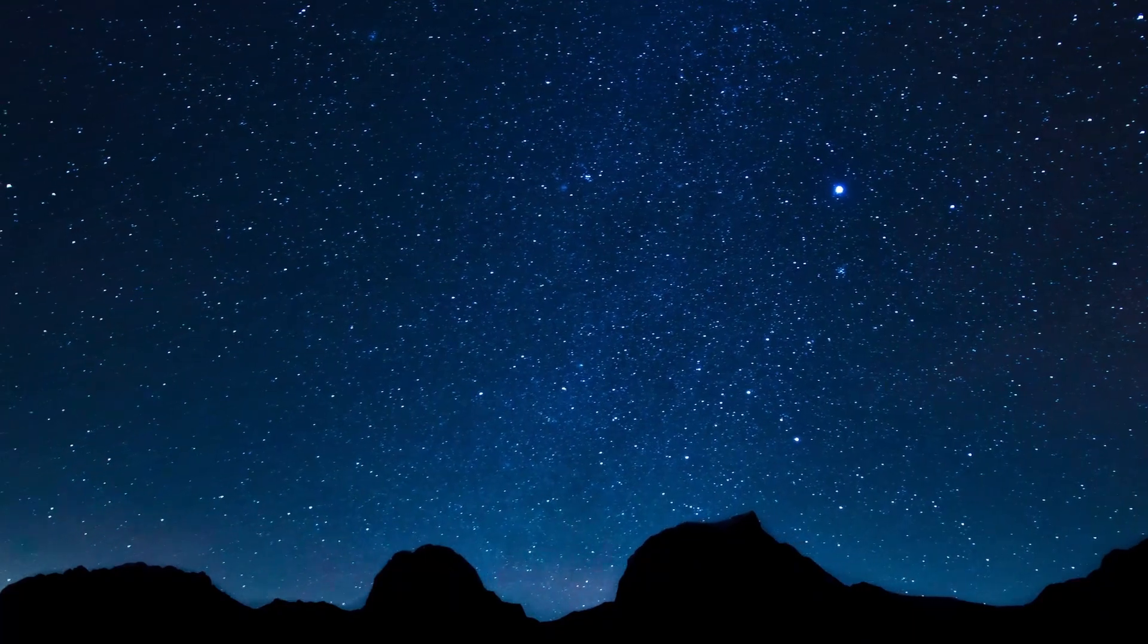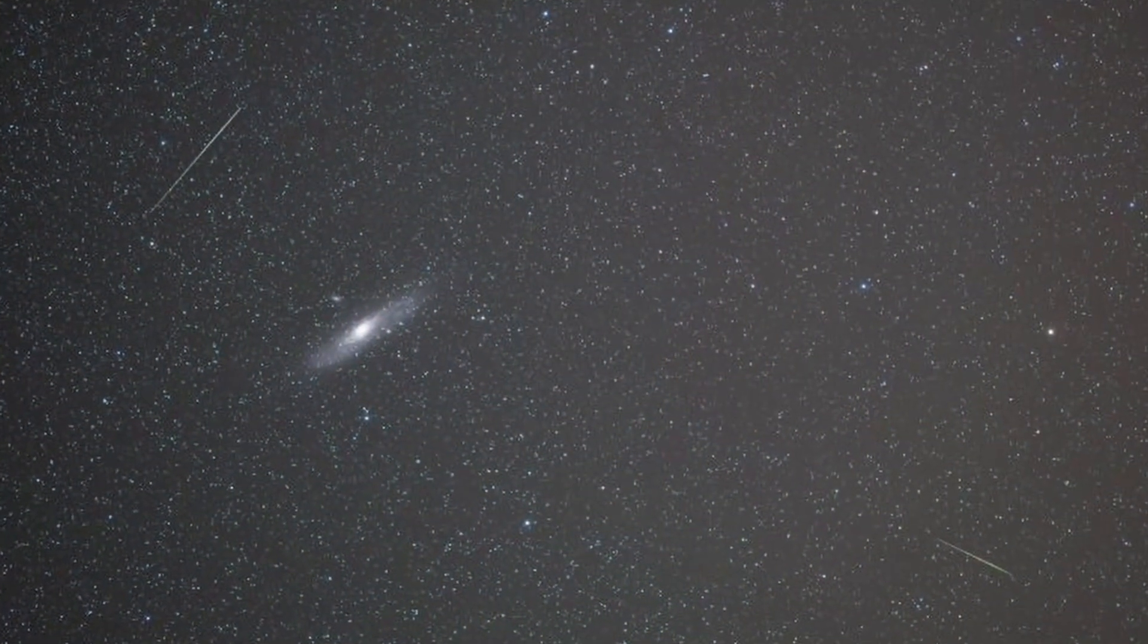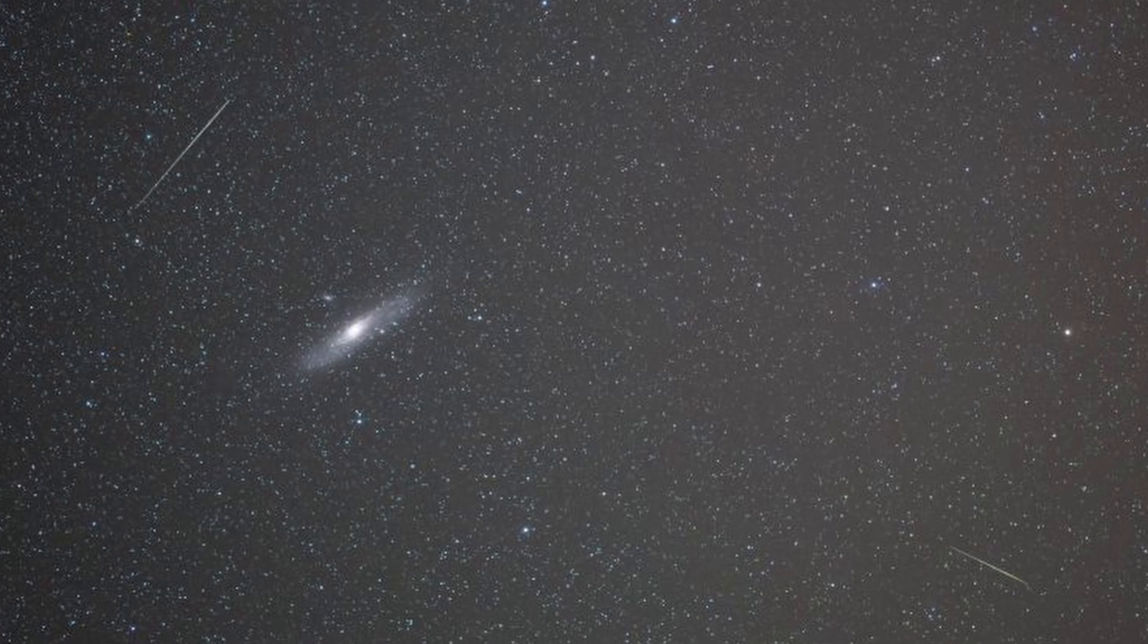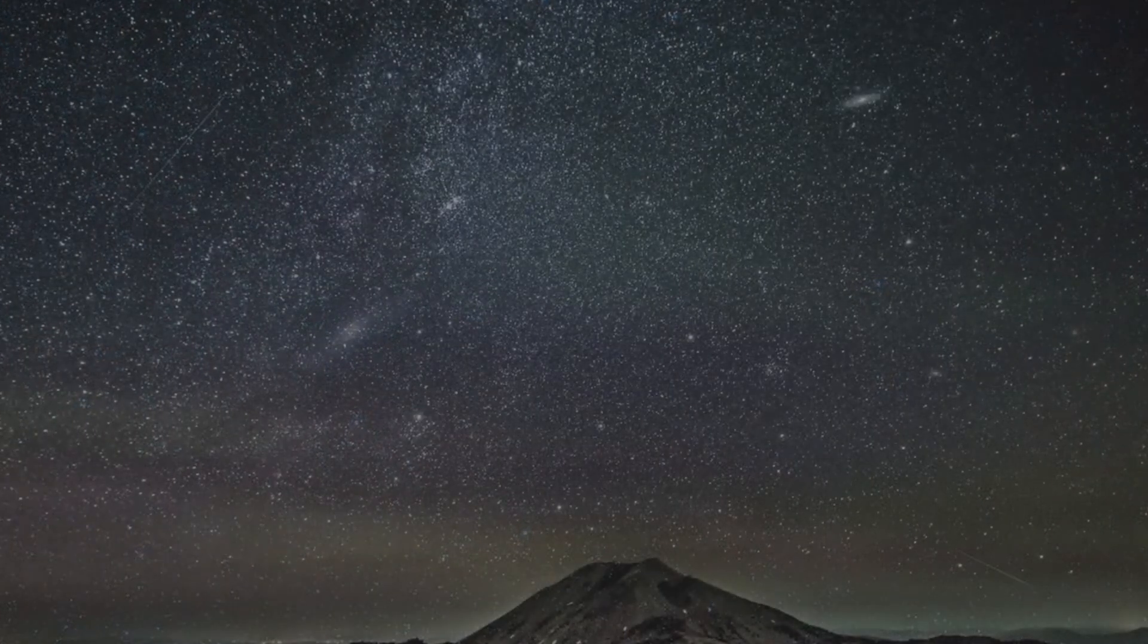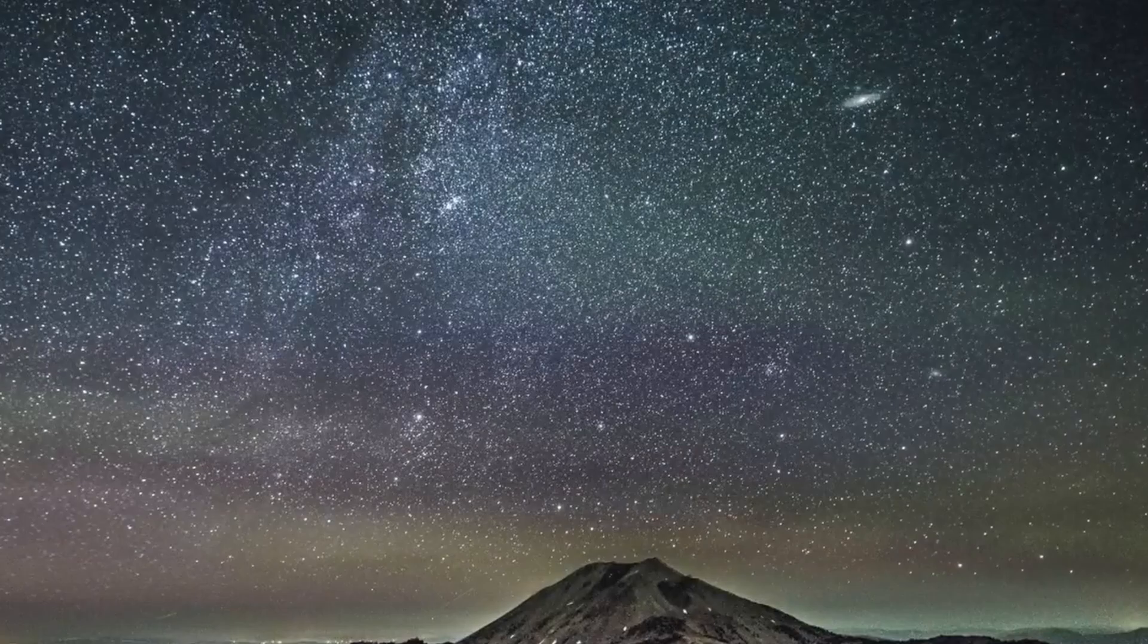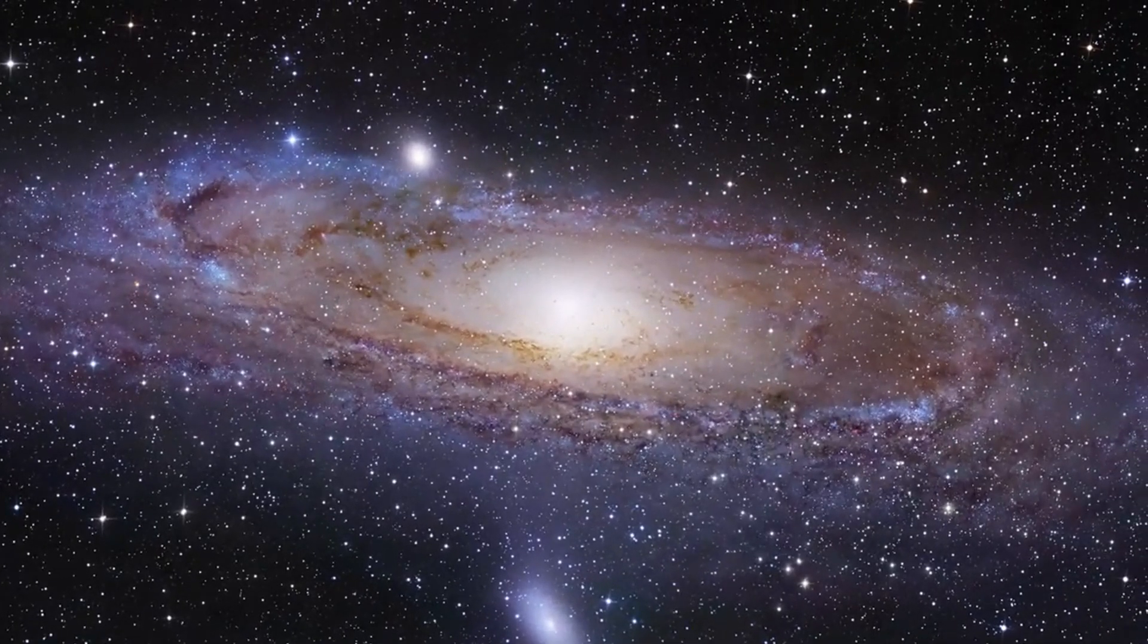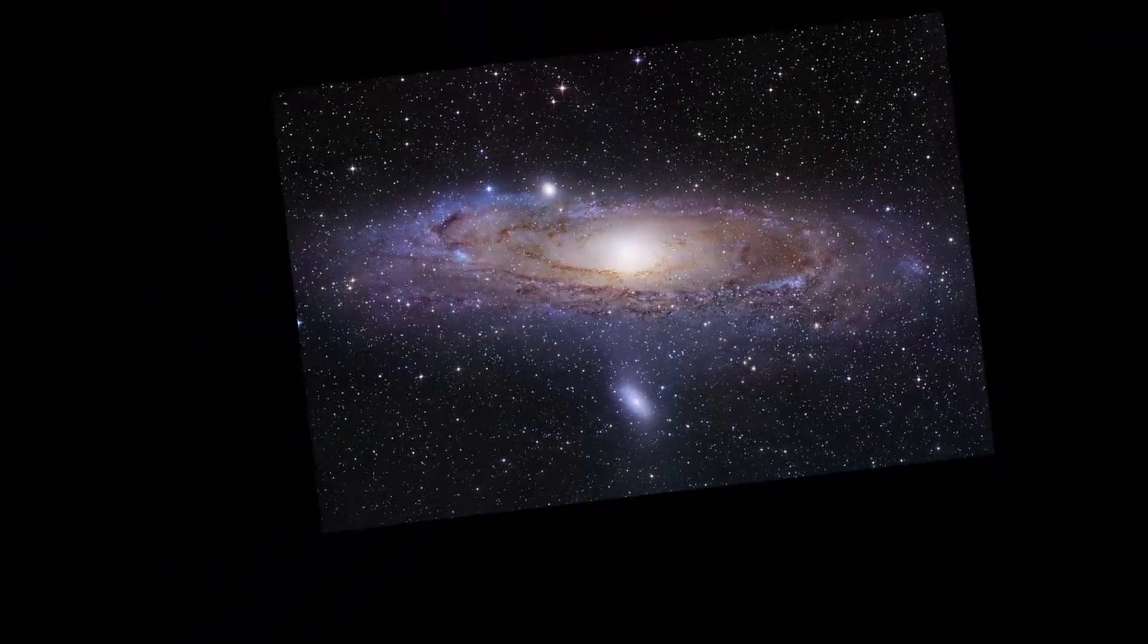It is possible to see the Andromeda galaxy with the eye alone from Earth's northern hemisphere. This galaxy appears as a hazy patch in our night sky. And indeed this haze represents the light of the Andromeda galaxy's billions of stars. But we still can't see individual stars within the galaxy, not even with amateur telescopes.